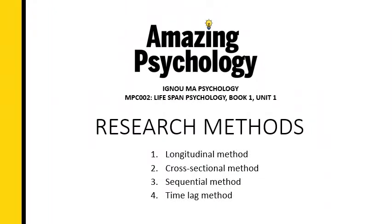There are a total of four research methods mentioned in the IGNOU textbook. The first is the longitudinal method, the second is the cross-sectional method, the third is the sequential method, and the fourth is the time lag method. This question is quite important — I have gone through previous question papers for about seven years and the research methods question has come twice as a 10-mark question and two more times as a six-mark question.